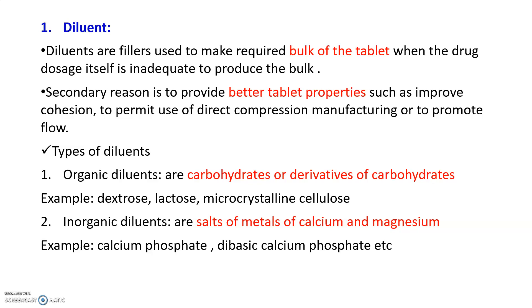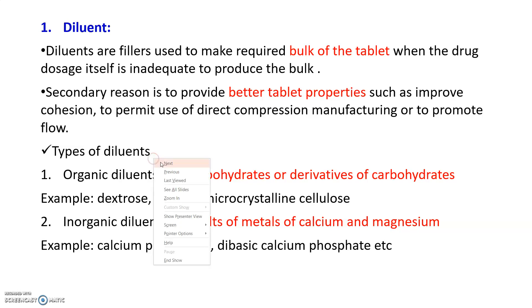Organic diluents include dextrose, lactose, microcrystalline cellulose. Inorganic diluents are salts of metals and calcium — such as calcium phosphate, dibasic calcium phosphate, and tribasic calcium phosphate — derived from inorganic sources.